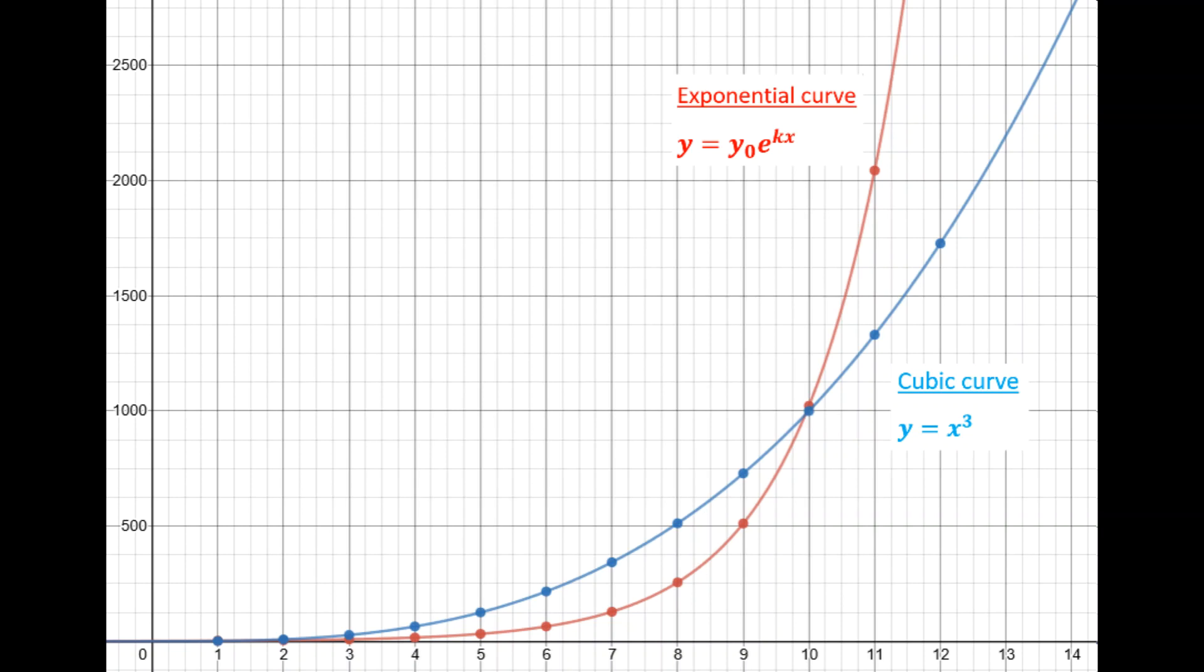One shows exponential growth. The other one is a cubic curve, something which is showing the cube of a number, y equals x cubed. Both the graphs rise quite steeply, although you can see that over time, it's the exponential one that really keeps up its increase at the steepest rate.